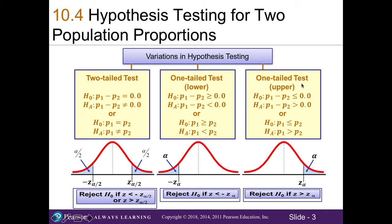For our one-tailed upper-tail test, if I take the difference of my two population proportions and it's an upper tail, it's going to be greater than zero, or a positive number. The second version, which I prefer because it's more direct, says that in my alternative hypothesis, our first population proportion is greater than our second population proportion. The greater than symbol points to the right, telling me I'm in an upper-tailed test. If my population proportion one is significantly greater than population proportion two, I'll be in the rejection region.